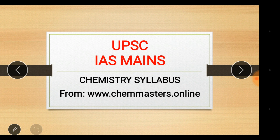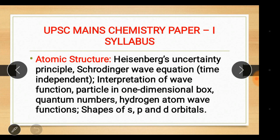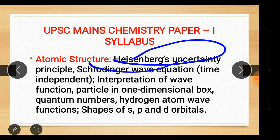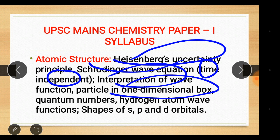I hope this information is helpful for you. Give a like, share and subscribe to my channel for more updates. UPSC Mains chemistry paper one syllabus: Atomic structure — we need to focus on Heisenberg's uncertainty principle, Schrödinger wave equation (time independent), interpretation of wave function, particle in a one-dimensional box, quantum numbers, hydrogen atom wave functions, and shapes of s, p and d orbitals.